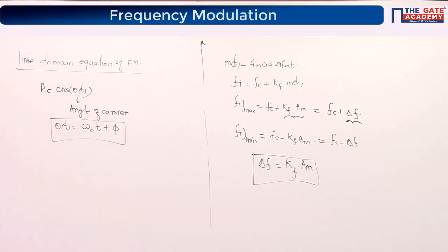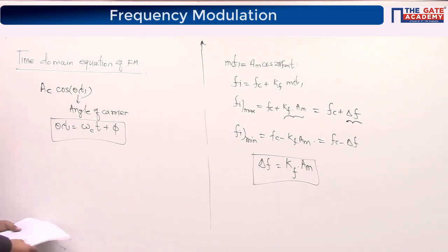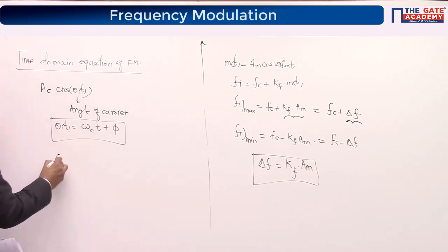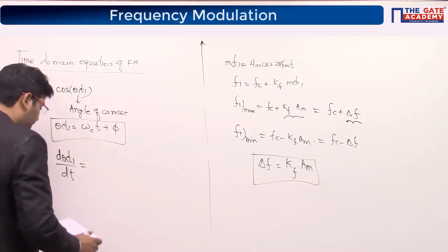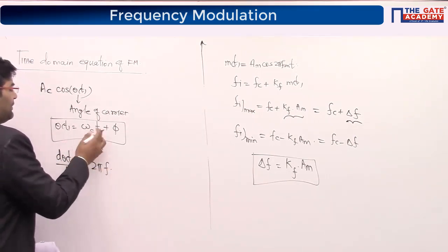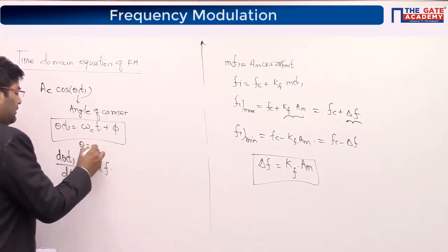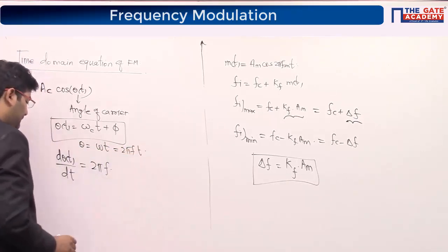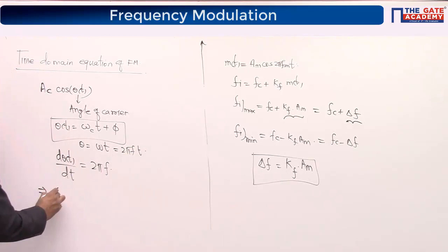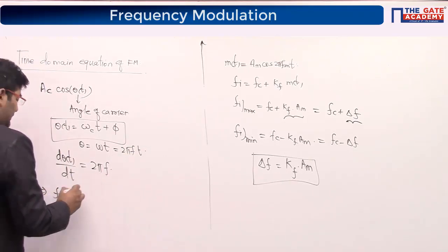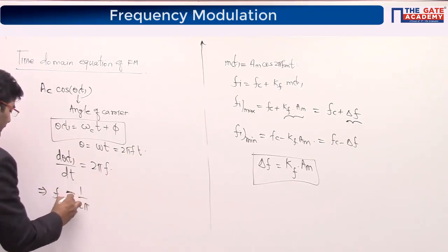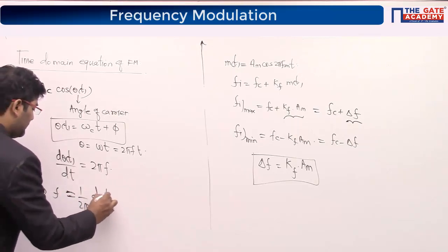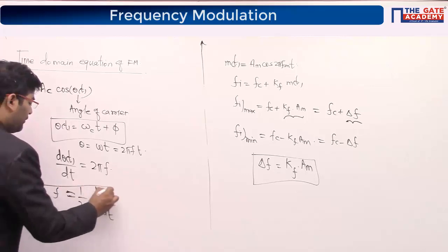This will change the whole game. We can write instantaneous frequency fi = (1/2π)·(dθ/dt). For FM, the fundamental block is fi = fc + Kf·m(t). Substituting, dθ = integral of 2π·fi·dt, and replacing fi: θ(t) = 2π·fc·t + 2π·Kf·∫m(t)dt. This is the key equation — note it with a star, as questions can be asked directly from this.